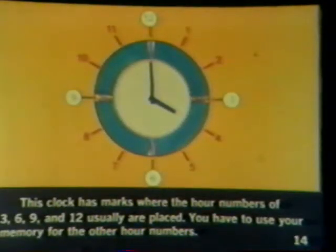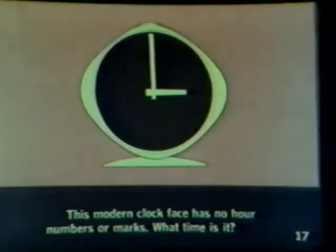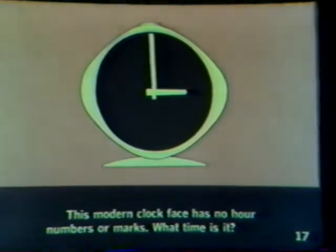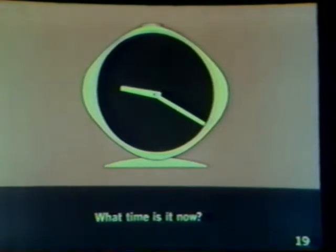Some clock faces do not have hour numbers or marks where the hour numbers usually are placed. This clock has marks where the hour numbers of 3, 6, 9, and 12 usually are placed. You have to use your memory for the other hour numbers. What time is it? It is 50 minutes after 2 o'clock, or 2:50. This modern clock face has no hour numbers or marks. What time is it? It is 3 o'clock. What time is it now? It is 20 minutes after 9 o'clock, or 9:20.